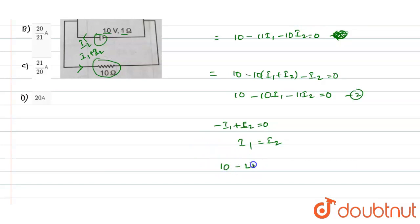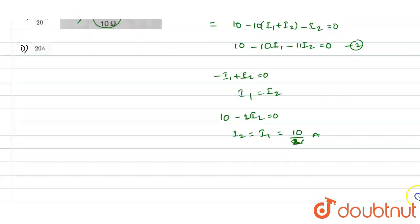10 minus 21 into i2 is equals to 0. So i2 value will be equals to i1, so that will be equals to 10 divided by... 20 divided by 21 amps. As this is the value of the current it should be in amps.